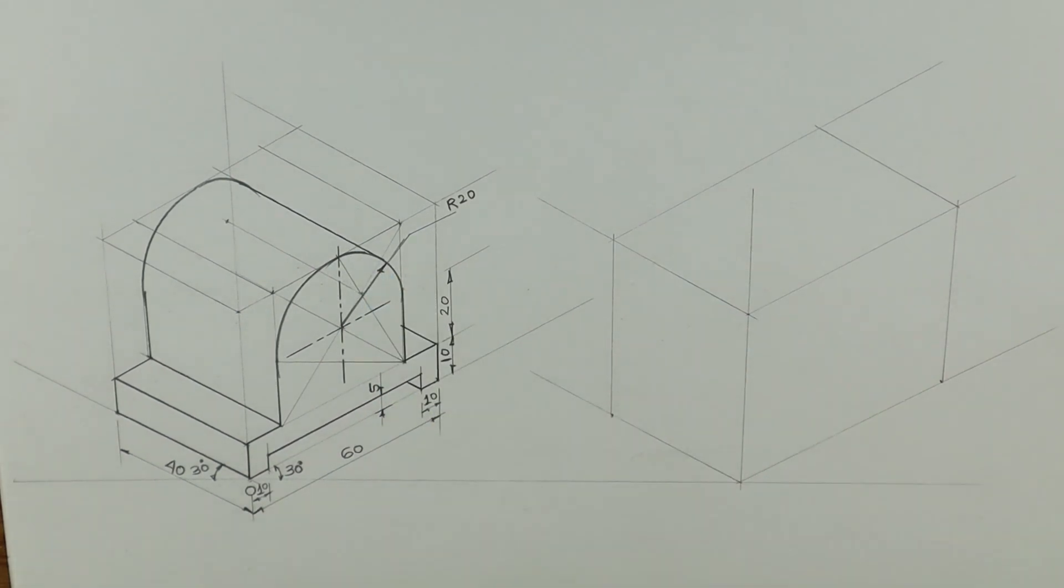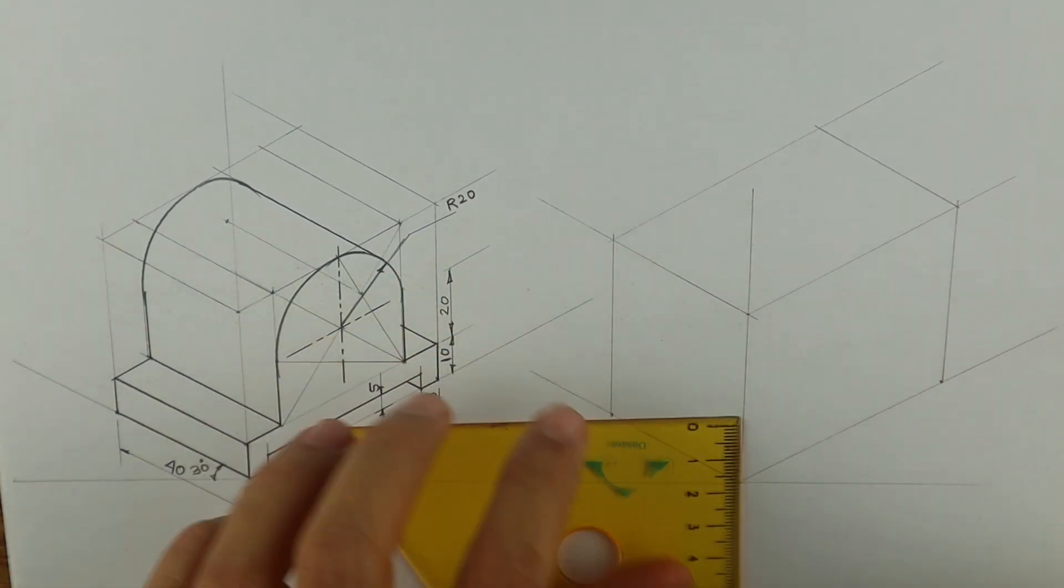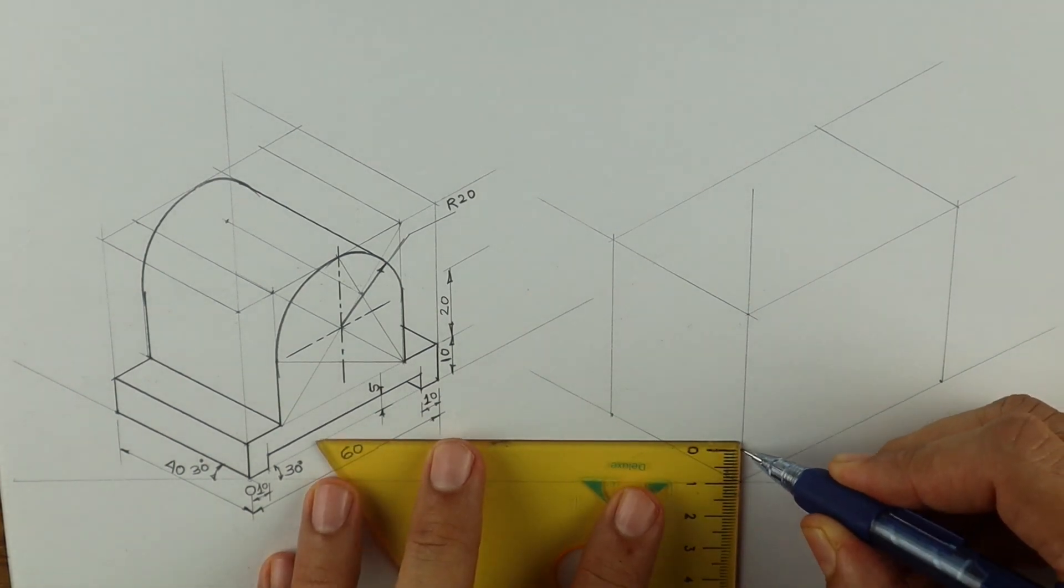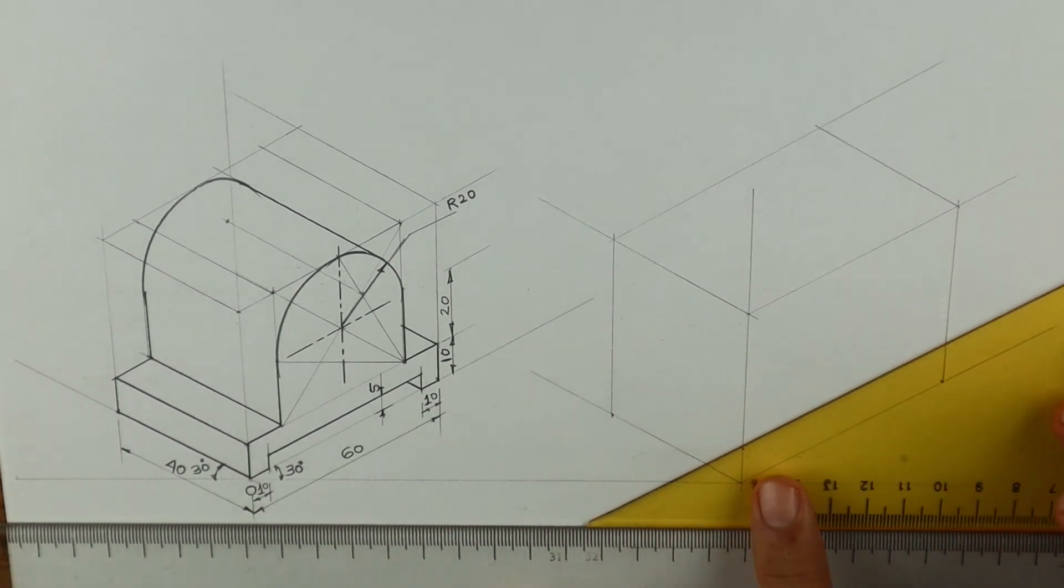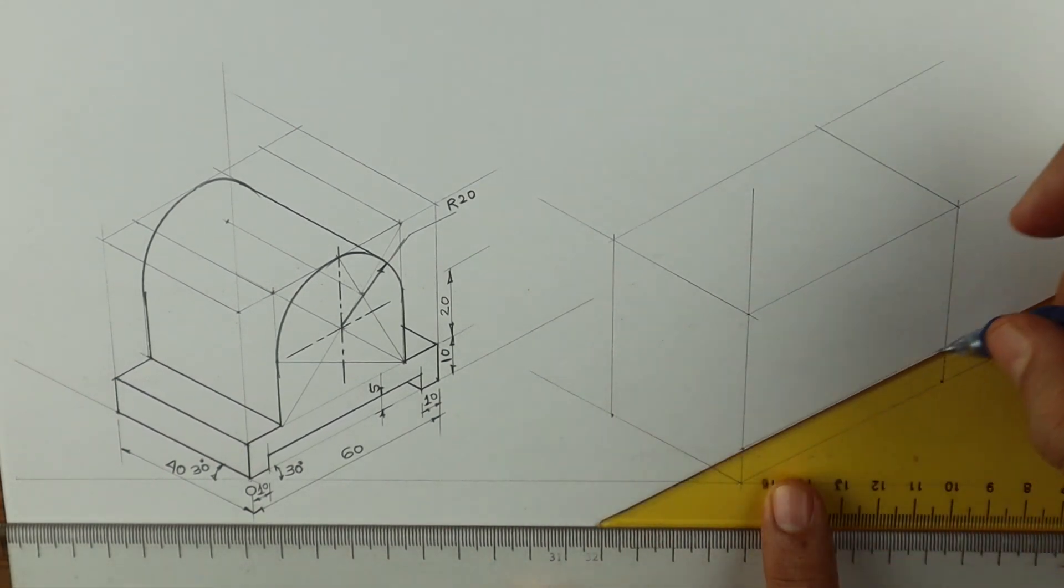First we will draw 60, 40 and 50 as shown in the figure and complete the box. Then we'll take height 10. See this, we'll draw a box.